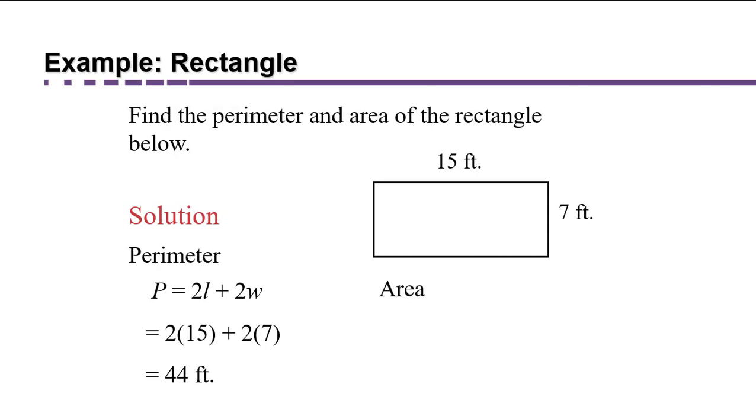Now let's find the area. Area of a rectangle is length times width, which is 15 times 7, which is going to be 105. And since we're measuring area, we're multiplying feet by feet and get feet squared, 105 square feet.